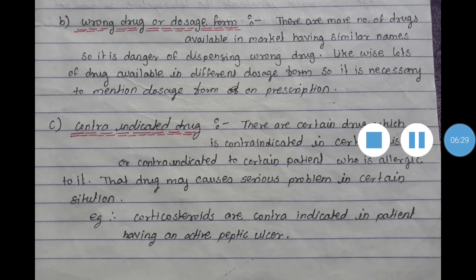Lots of drugs are available in different dosage forms. For example, azithromycin is available in tablet form, liquid form, and ointment form. So it is always necessary to write the correct dosage form in the prescription. The second reason due to which therapeutic incompatibility occurs is wrong drug and dosage form — because of similar names and the same medicament being available in different dosage forms.